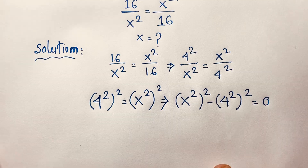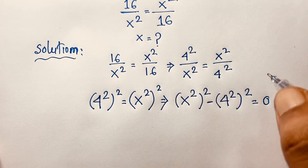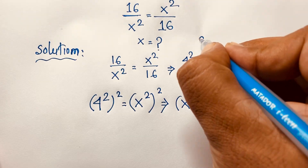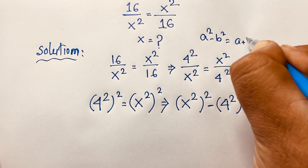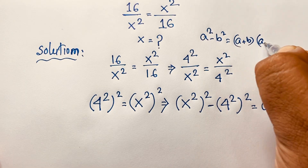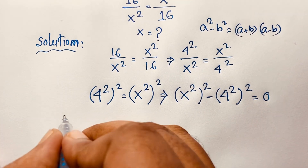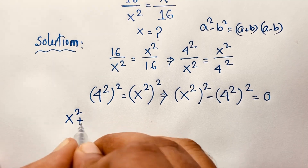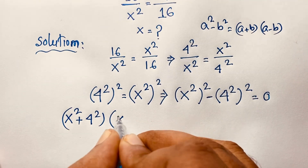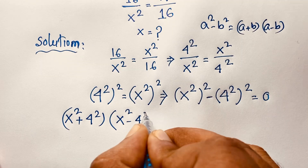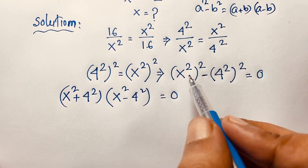Now we can see this is in the form of a squared minus b squared. We know that a squared minus b squared equals a plus b times a minus b. Applying this math formula here, it will be x squared plus 4 squared times x squared minus 4 squared.